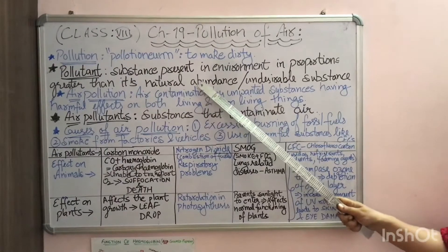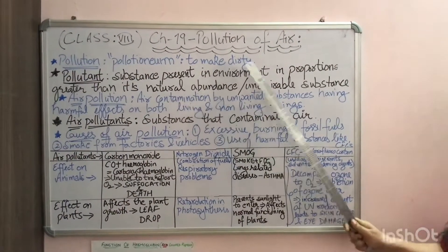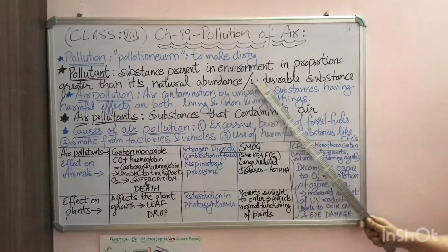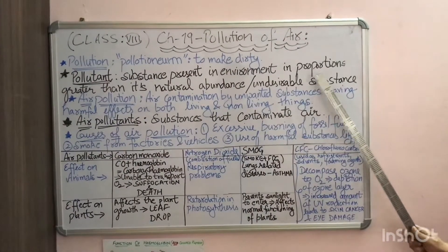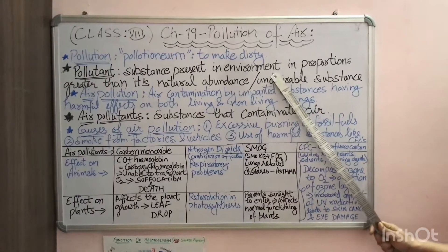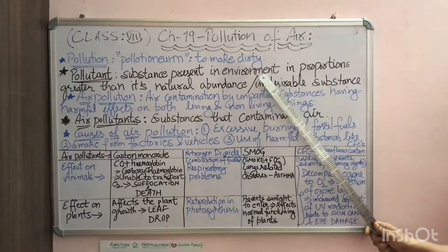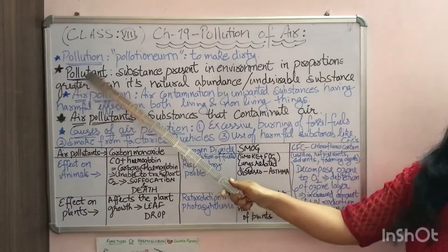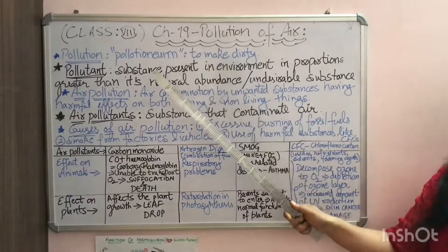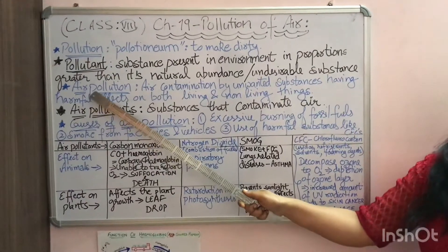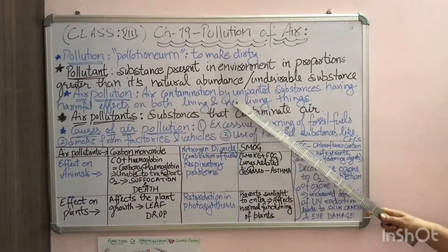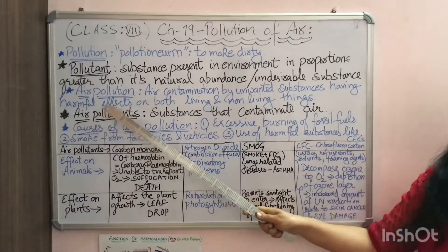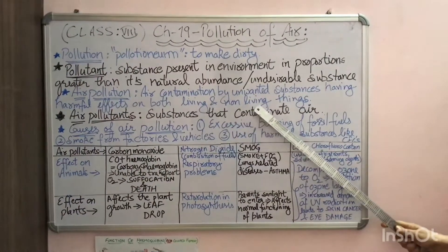That means if a substance is present more than the required proportion in nature, we will call it a pollutant. Or it can be any undesirable substance added to the environment which makes all of us uncomfortable, not safe, and unhealthy — then we call that substance a pollutant. In reference to this chapter, air pollution is the contamination of air by unwanted or undesirable substances having harmful effects on both living as well as non-living things.